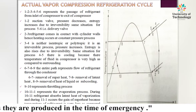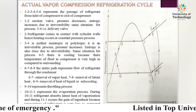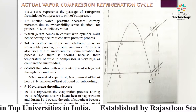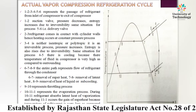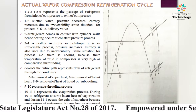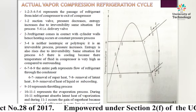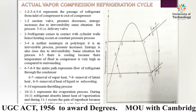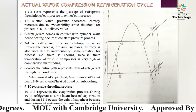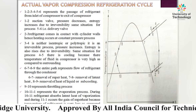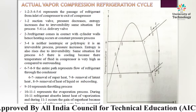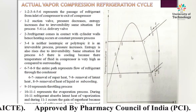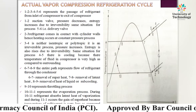In the ideal cycle, the compression process 3→4 is assumed to be a reversible adiabatic (isentropic) process. However, in the actual cycle, it is neither isentropic nor polytropic — it is an irreversible process in which pressure rises and entropy also increases due to irreversibility. The 3→4 curve is therefore inclined in the forward direction with respect to the S axis.